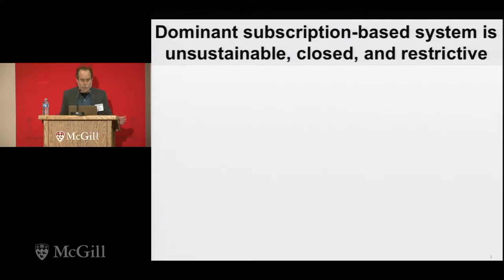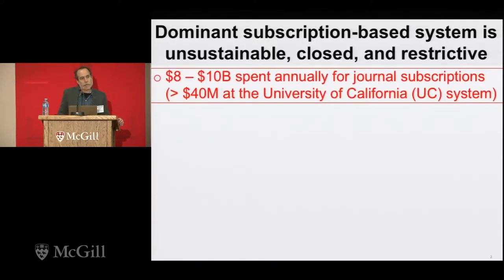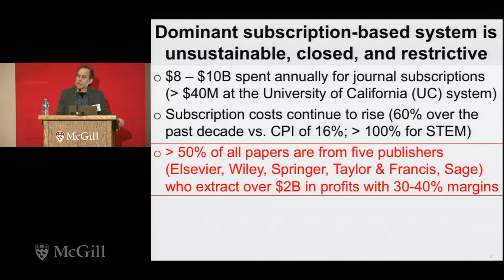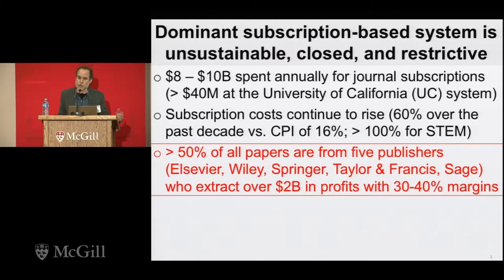The commercial publishers and the dominant subscription-based system have created an unsustainable, closed, and restrictive way of doing business. It's estimated that between $8 and $10 billion are spent worldwide in journal subscriptions. At the University of California system, we spend well over $40 million a year accessing content — a lot of which we've generated ourselves. Subscription costs continue to rise; over the last 10 years we've seen over a 60% increase, and in STEM fields well over a 100% increase. 50% of all papers are published by five publishers — Elsevier, Wiley, Springer, Taylor and Francis, and Sage — and they extract billions of dollars in profits, much of it from non-profit institutions with public missions, coming straight out of taxpayers' pockets.